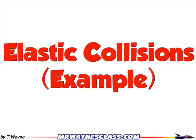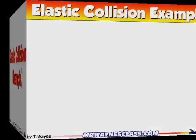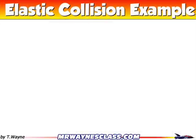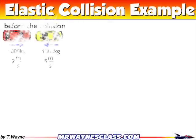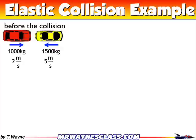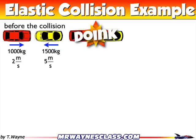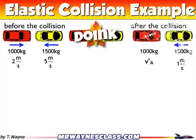This is the video solution to the elastic collision example problem. In the example problem, it starts off with a before situation where I've got two cars going head-on into each other — one at 2 meters per second, one at 5 meters per second — and they have different masses, as shown. They collide, and then after the collision they've separated, so they still become two objects.